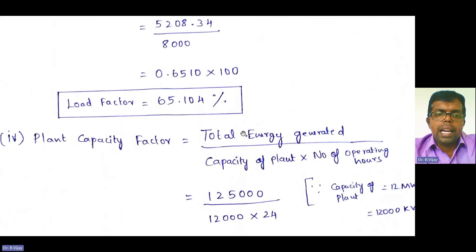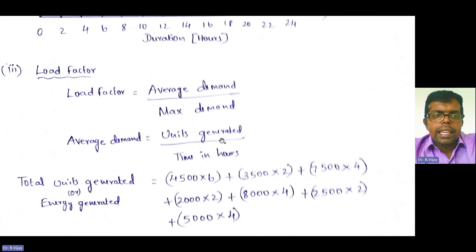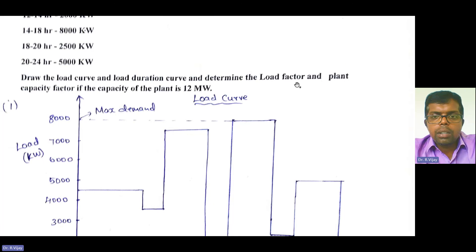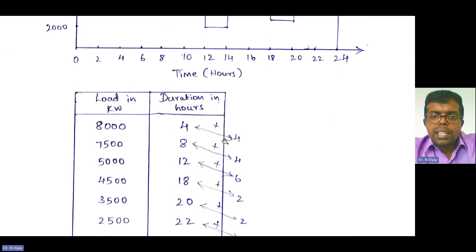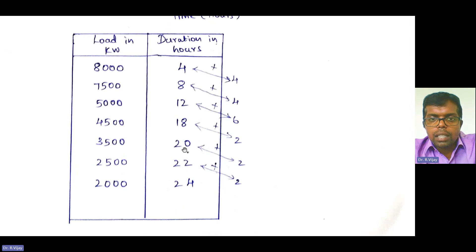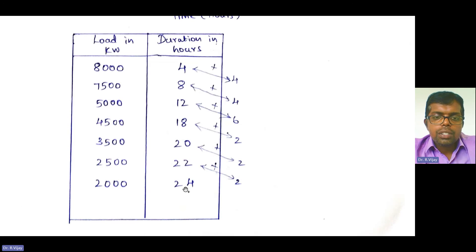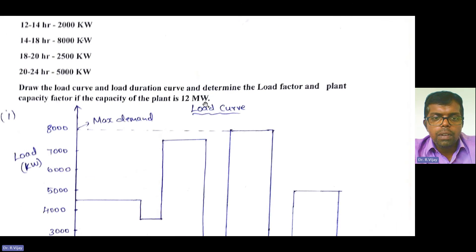These are the things asked: plant capacity factor, load factor, load duration curve, and load curve. This is suitable for a 10-mark question. While calculating the cumulative duration, at the end you must get 24 hours. If you get 23 or 25 hours, the problem is wrong, because the duration is given for the whole day — 24 hours.